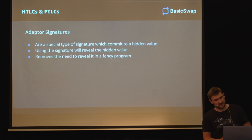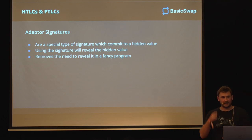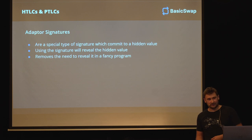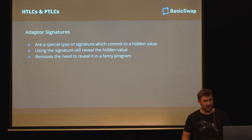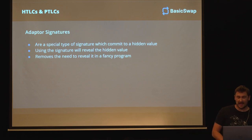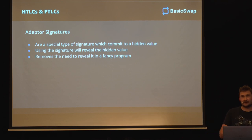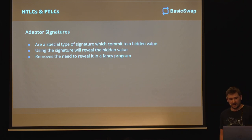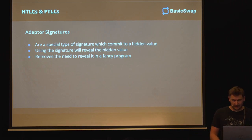And that's where adapter signatures basically come in. They are basically a special type of signature that commit to a hidden value. You can look at it as: I give you a key, but it's booby trapped. And if you want to use the key, you'll have to get past the booby trap. But if you get past the booby trap, I get the secret. It's basically: if you're going to use it, you're going to tell me a secret. And using this signature, it will basically reveal a hidden value. We use this kind of scheme just because it is a nice way to get around requiring programmability like scripts on the blockchain.